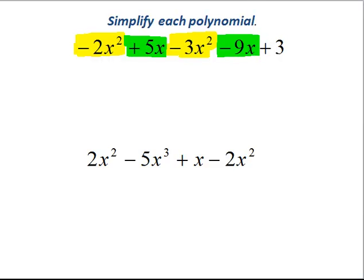So the next thing I'm going to do is I'm going to rewrite my terms now. I'm going to preserve the sign, so I'm not going to change their sign. I'm just going to rewrite them so that they're grouped by term. So I have negative 2x squared, minus 3x squared, plus 5x, minus 9x, and then last but certainly not least, plus 3.